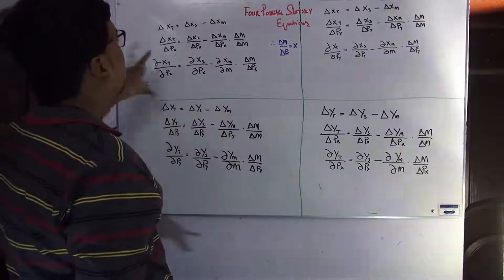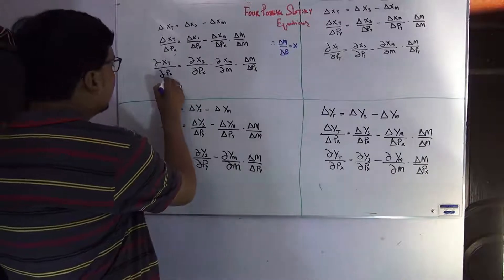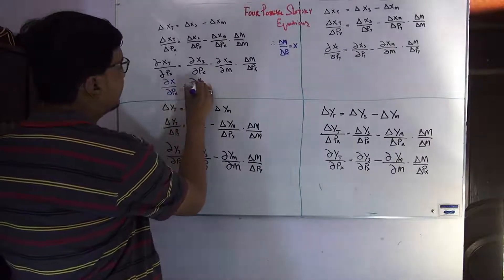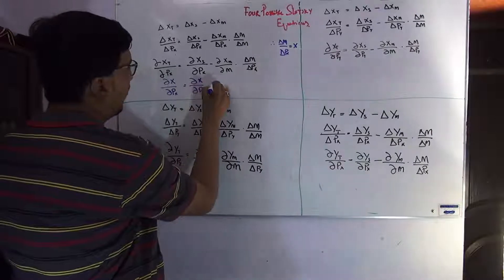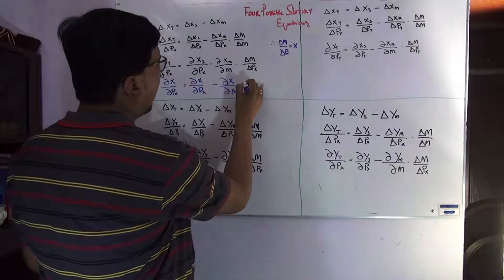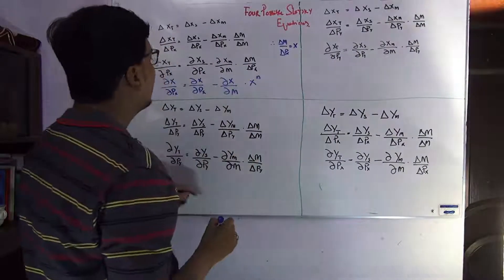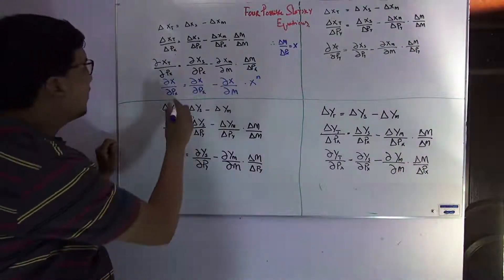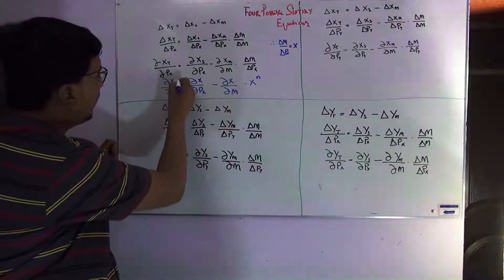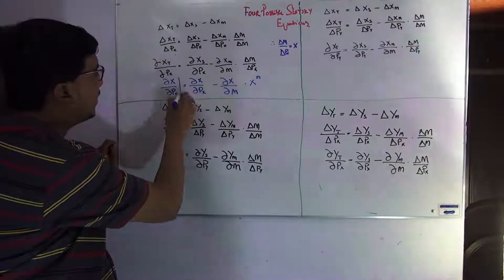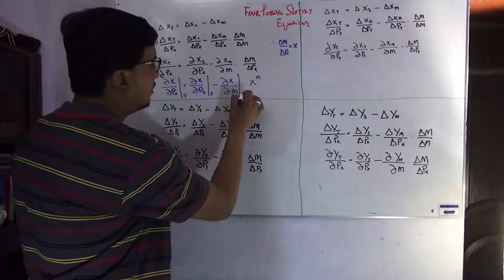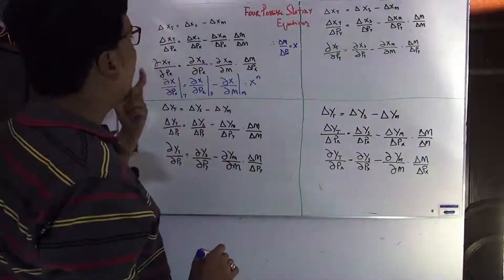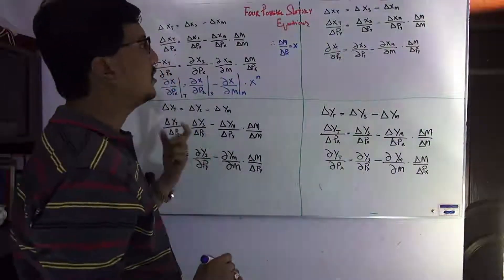So we can say that the change in X over the change in price of X is equal to the change in X over the change in price of X (substitution effect) minus the change in X over the change in income multiplied by X — the Marshallian demand function. In many books, T denotes the total effect and S denotes the substitution effect. This is the first Slutsky equation with the own price impact of commodity X.